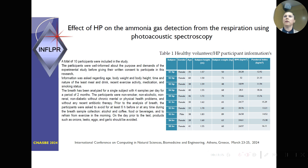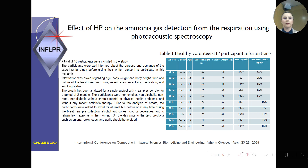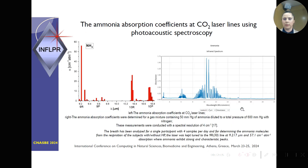Today I present the effect of Helicobacter pylori on ammonia gas from respiration using this technique. As a result, we studied 10 participants. The participants were first well informed about the proposal and demands of the experimental study before giving their consent. Breath was analyzed for a single subject with four samples per day over a period of two months. Participants were non-smokers, non-alcoholic, and so on. Prior to the test, products such as onions, leeks, eggs, and garlic should be avoided, because all these can interact with the gases we want to investigate from the respiration.